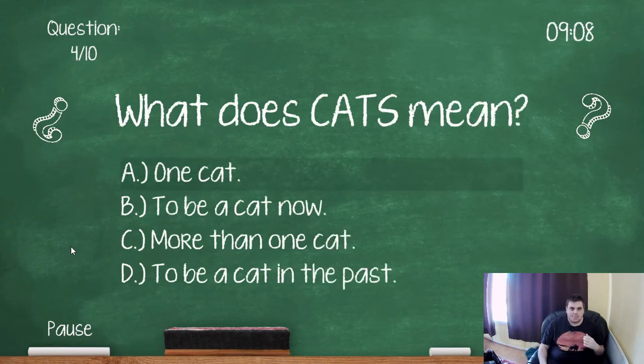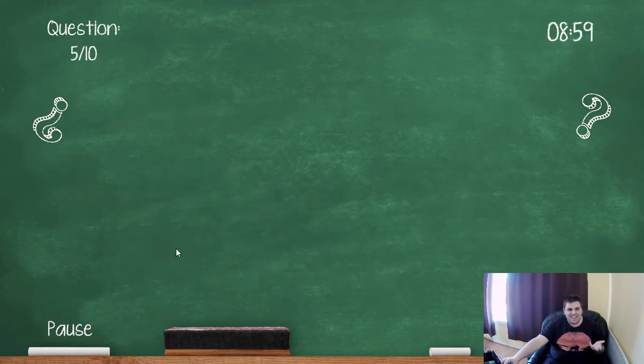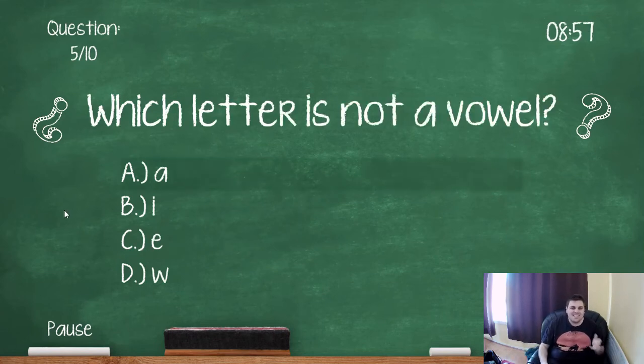What does cats mean? So one cat, to be a cat now, more than one cat, to be a cat in the past. So it's plural. C. Which letter is not a vowel? So again, the vowels are A, E, I, O, U. W is not a vowel.